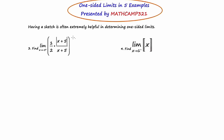Let's think back to the beginning of this course when we discussed what this graph looks like. Absolute value of x plus five over x plus five is what I'm calling Jesse's giant step. The step is actually going to be over here at negative five.